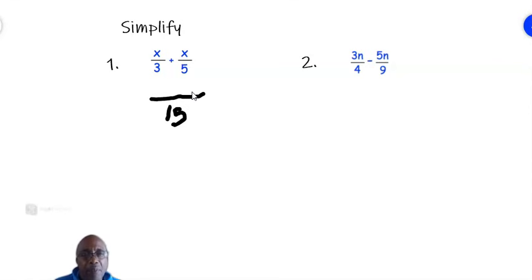So for x over 3, 3 into 15 is 5. It means we multiply 5 by 3 to get 15. So we multiply x times 5 to get 5x. So x over 3 equals 5x over 15. Do the same for the second fraction. 5 into 15 is 3. So we multiply 3 times x to get 3x.